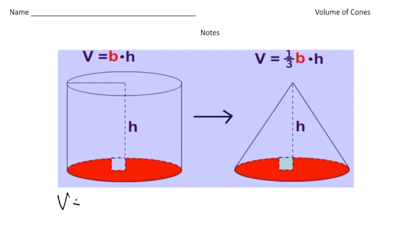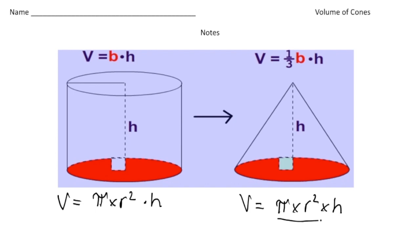To find the volume of the cylinder, it's the area of the base — which is pi times radius squared — multiplied by the height. To get the volume of the cone it's almost the exact same thing, except: volume equals pi times radius squared times the height, divided by 3. You could fit exactly three of these cones inside this cylinder, so it's one-third the volume of the cylinder.